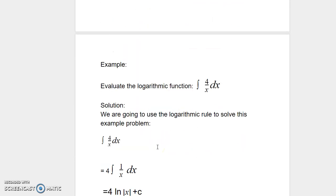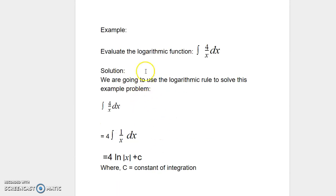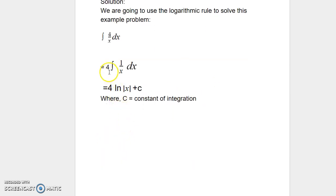Let us look at some example problems. We want to evaluate the integral of 4 over x dx. We are going to use the logarithmic rule. Since 4 is a constant, we take the 4 outside of the integration and write this as 4 times the integral of 1 over x dx. We know that integral 1 over x dx equals ln of x.